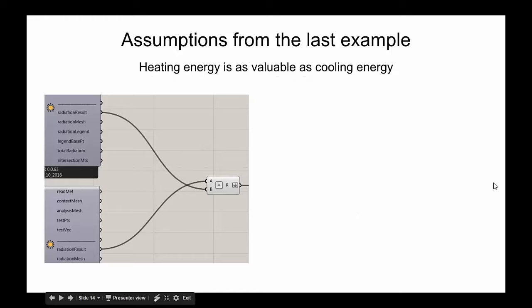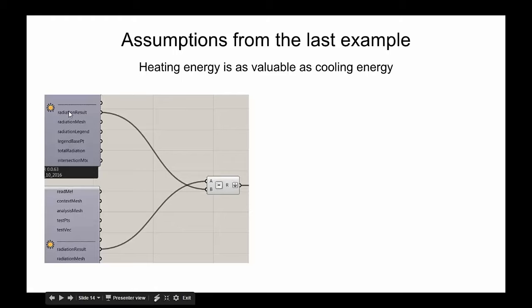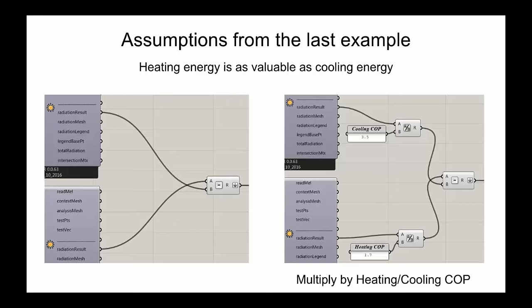Another assumption from the last example was that we simply subtracted bad radiation from good radiation — implying that heating energy is as valuable as cooling energy. While this is roughly true when you trace back to fossil fuel consumption, your specific building might be very different. For instance, if you're cooling with lake-source cooling and have a lot of free cooling, you could divide by the coefficient of performance of your heat pump to weight these two factors differently.